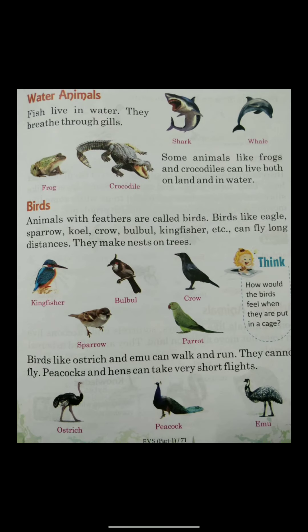Now let's read about water animals. Fish and a few other animals live in water — they are called water animals. They breathe through gills, while we human beings breathe with the help of our lungs. For example, sharks and whales are water animals. And some animals like frogs and crocodiles can live both on land as well as in water.